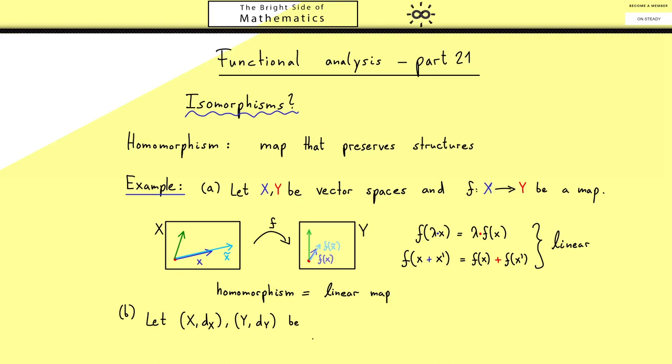Here X and Y should be two metric spaces. Please recall in the first example there was no metric, no norm for the vector space. There was just the algebraic structure which was preserved.